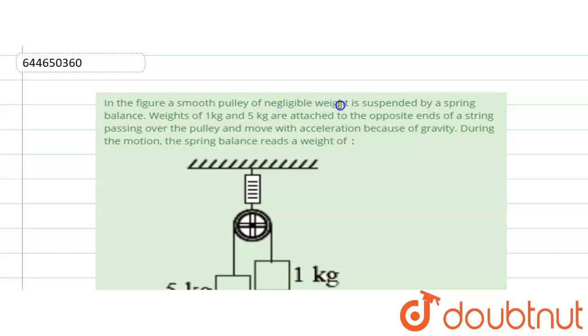The question is: A smooth pulley of negligible weight is suspended by a spring balance. Weights of 1 kg and 5 kg are attached to the opposite ends of a string passing over the pulley, and they move with acceleration due to gravity. During the motion, we have to find the spring balance reading.